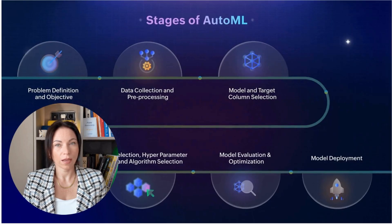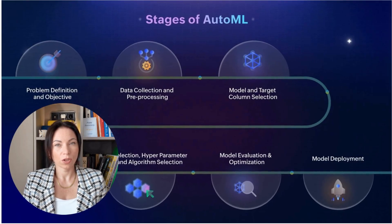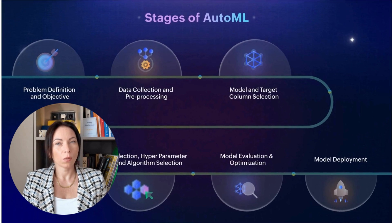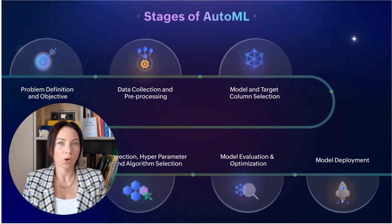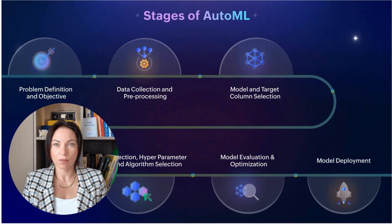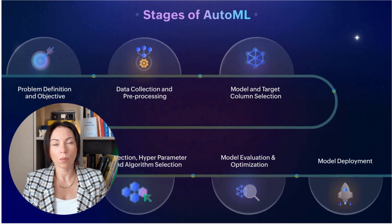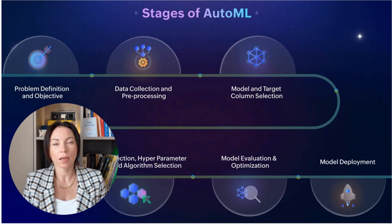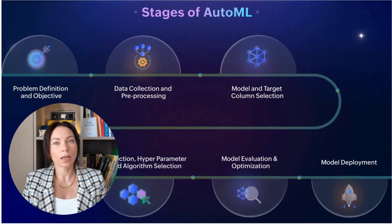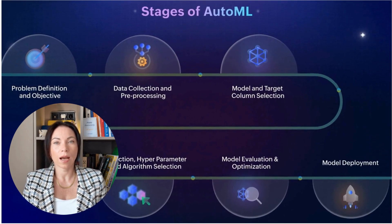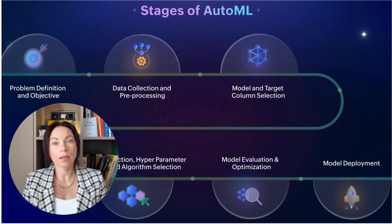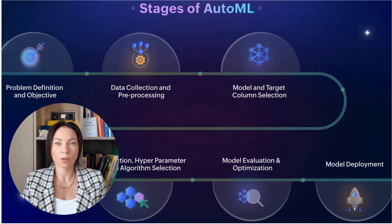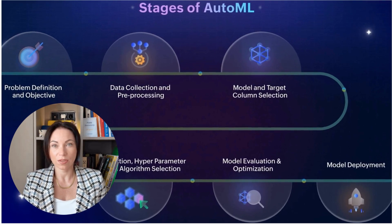Now, let's chat about the stages of building churn prediction models. It's not just a one-step process. We're talking about several stages here using Zoho Analytics AutoML. First, we need to define the problem and zero in on what churn means for your specific business. Then, the journey continues with collecting and processing your data. After that, it's about choosing the right algorithms and building a classification model. Each stage plays a role in accurately predicting which customers might be slipping away.